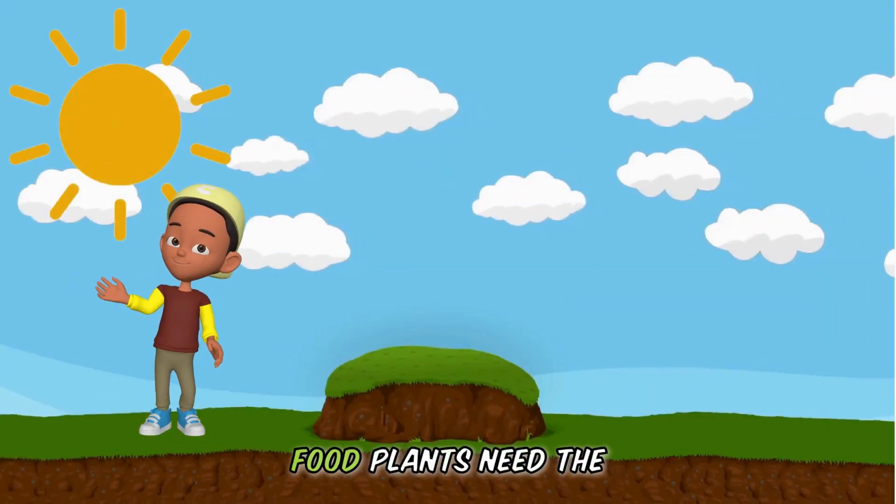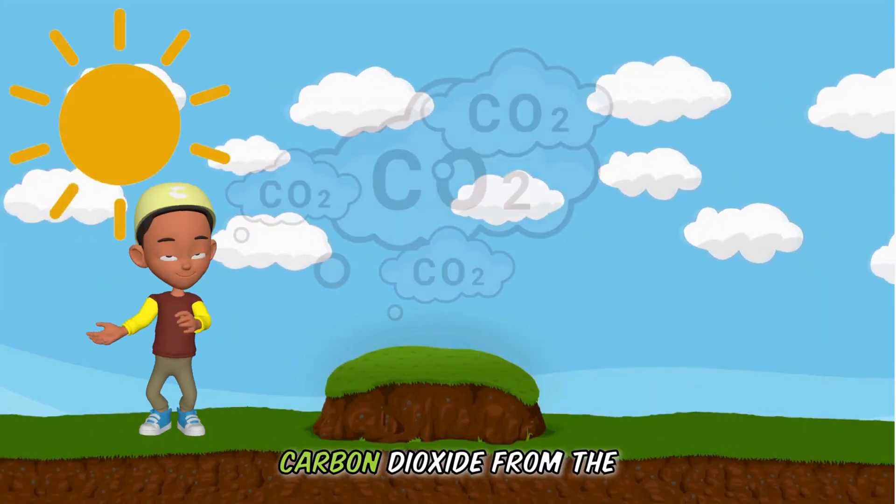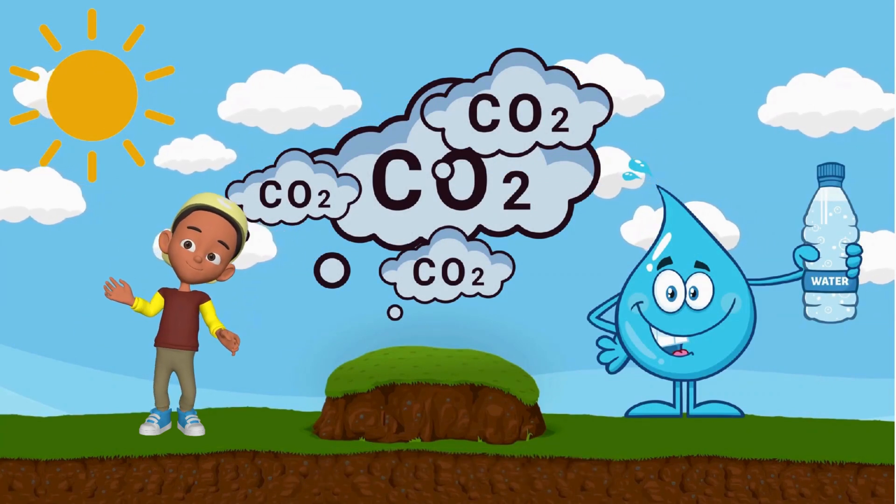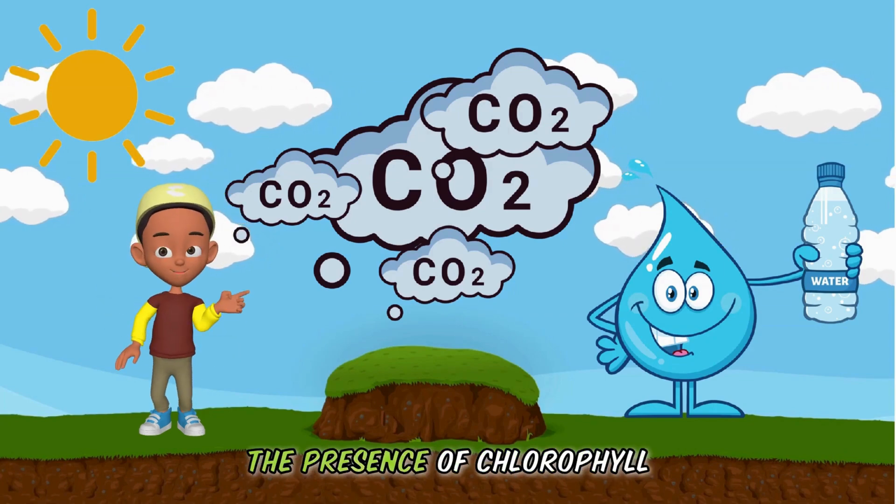To make their own food, plants need the sun, carbon dioxide from the atmosphere, water from the ground, and finally, plants need the presence of chlorophyll.